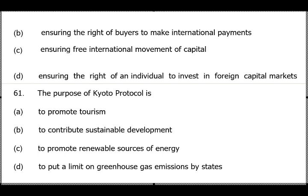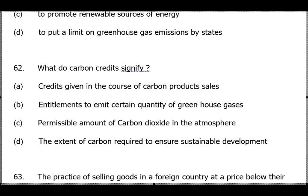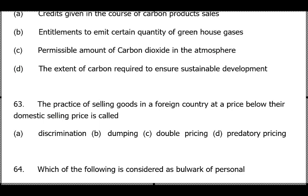Question 61: The purpose of the Kyoto Protocol — answer is D, to put a limit on greenhouse gas emissions by states. Question 62: Carbon credits signify entitlements to emit a certain quantity of greenhouse gases — answer is option B. Question 63: The practice of selling goods at below-market prices — that's dumping, which China is doing by selling goods in India at lower prices than local goods. Answer is option B.